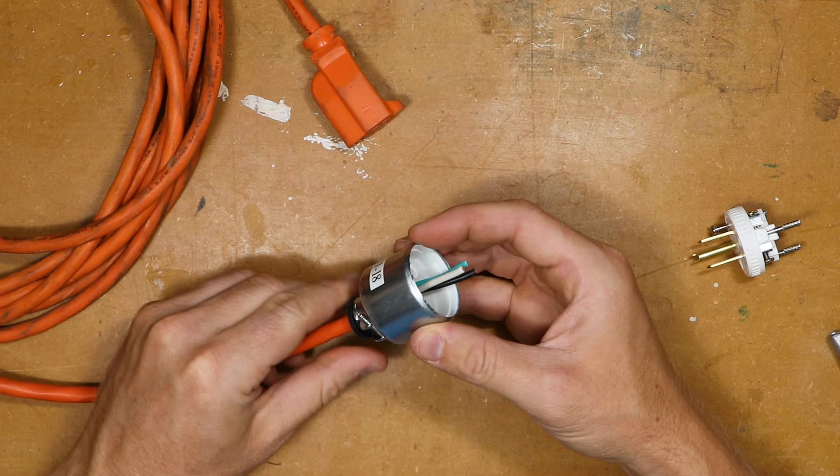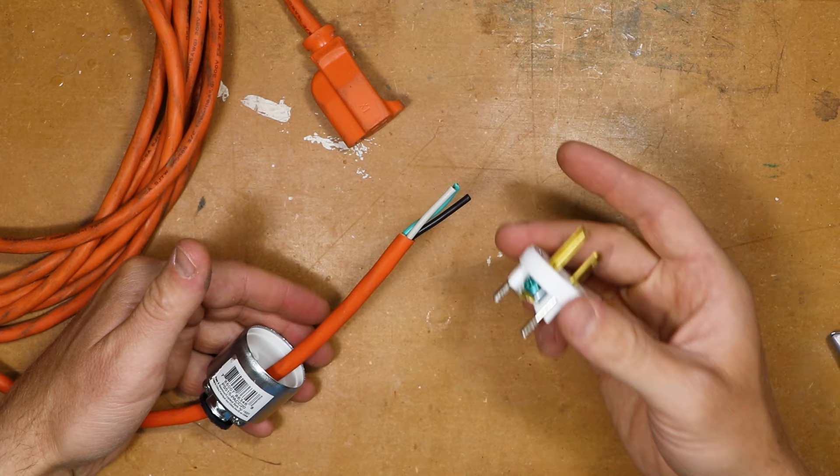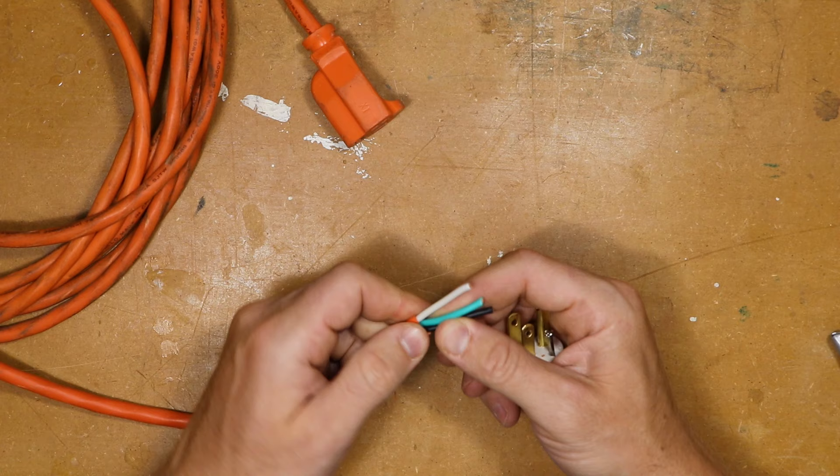The first thing we need to do is make sure we get this lower section on. Because if we go ahead and install this without putting that on, we're going to have to take this off again. So I have that on, out of the way, out of mind.